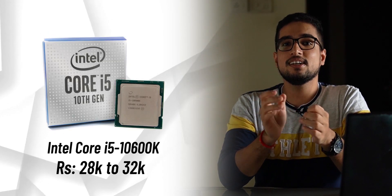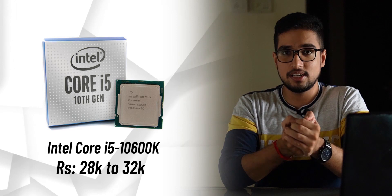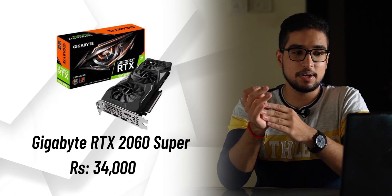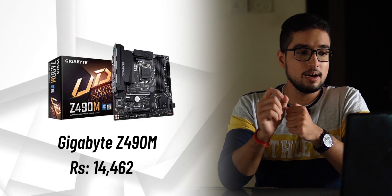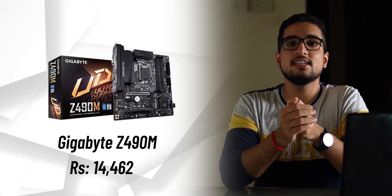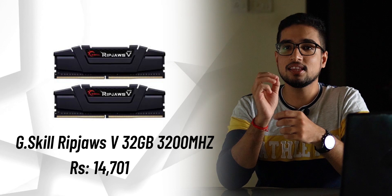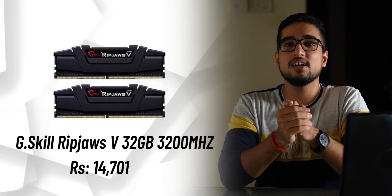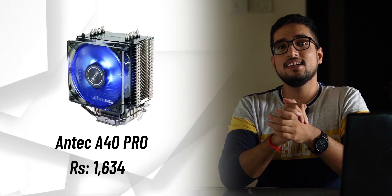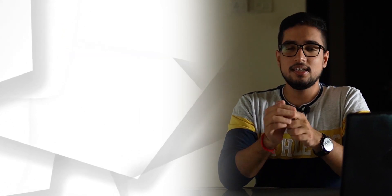If you are watching this video when Intel CPUs become available in India, you can go to this PC build. The CPU we will use is the Intel i5-10600K, with an estimated price of around 28,000 to 32,000 rupees. The GPU will be the RTX 2060, priced around 34,000 rupees. The motherboard will be the Gigabyte Z490M, which supports Intel's 10th generation, priced at around 14,462 rupees. The RAM will be G.Skill 32GB, priced at around 14,701 rupees. Since Intel's processor does not come with a CPU cooler, we will add the NTEK A40 Pro cooler, priced at around 1,600 rupees.